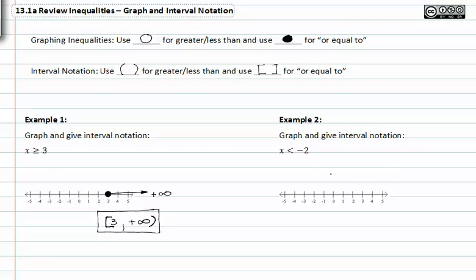In example two, we are asked to graph and give interval notation for x less than negative two. First, we find negative two on our number line, and since it's not equal to, it's just x less than, we have to use an open dot.